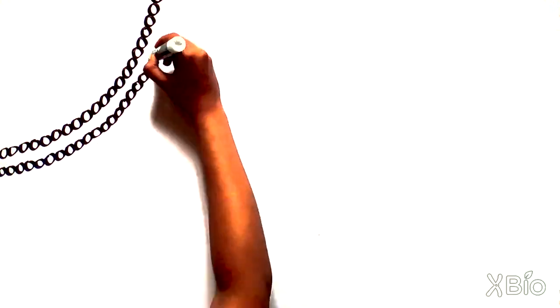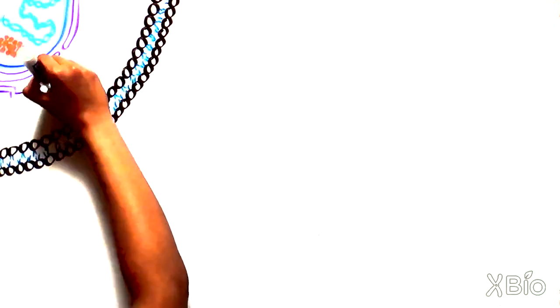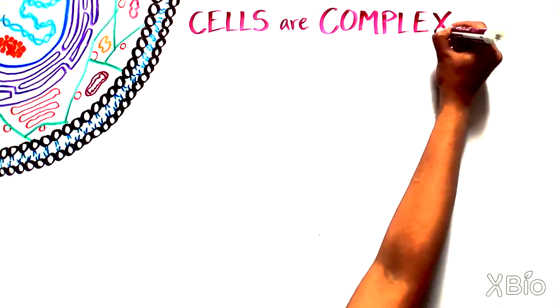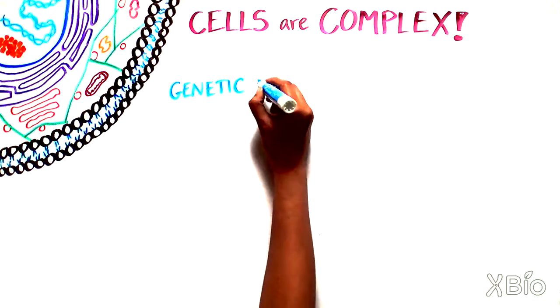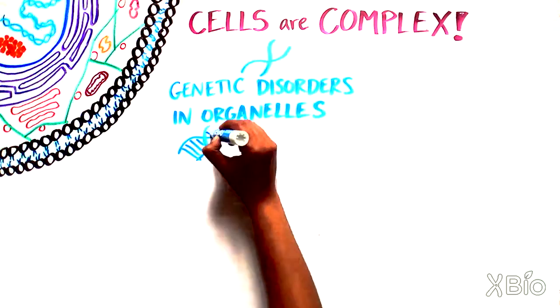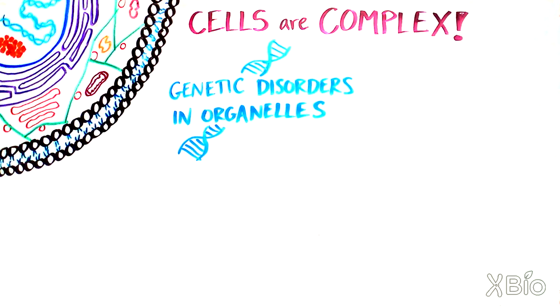As our tour concludes, I hope that you can appreciate that the cell is a complex environment with many parts working together to keep our bodies going. Thus, not surprisingly, individuals with genetic disorders in one of the cell's organelles often have severe disease.